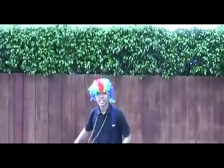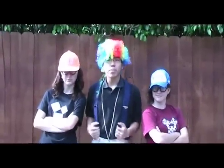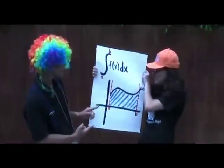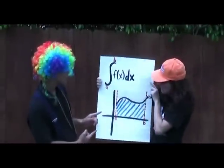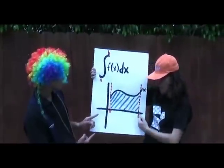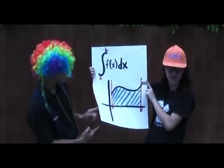Hey kids, I'm Calculus Carl, and I'm Derivative Daisy, and I'm Anti-Derivative Ashley. Today we're going to learn something really fun: Area and Volume. Using integration, you can find the area bounded by the x-axis using this formula. The integration from A to B of f of x dx, where A and B are the start and end points of the region you want to find the area of, and f of x is your function.